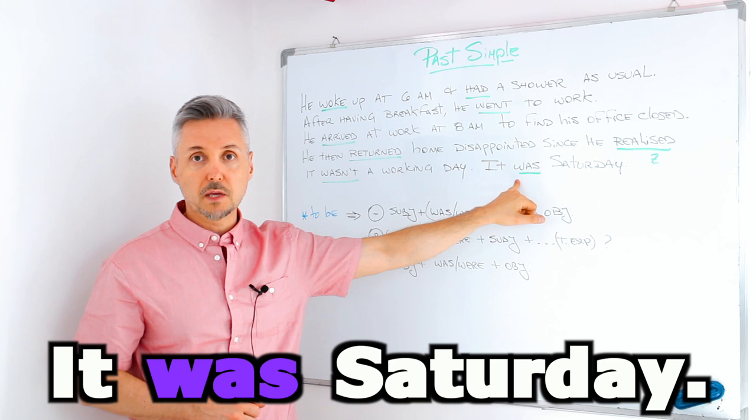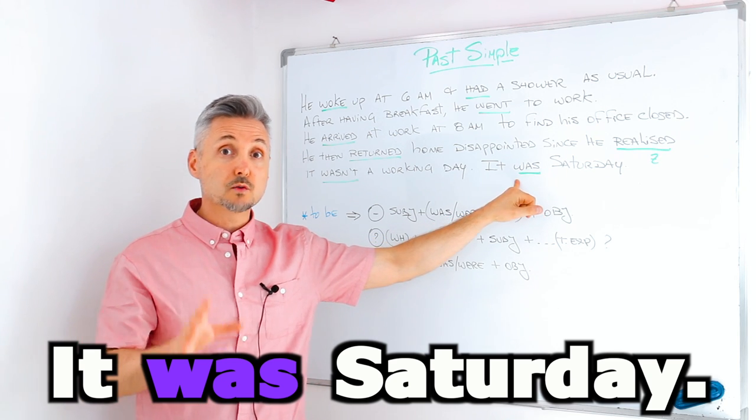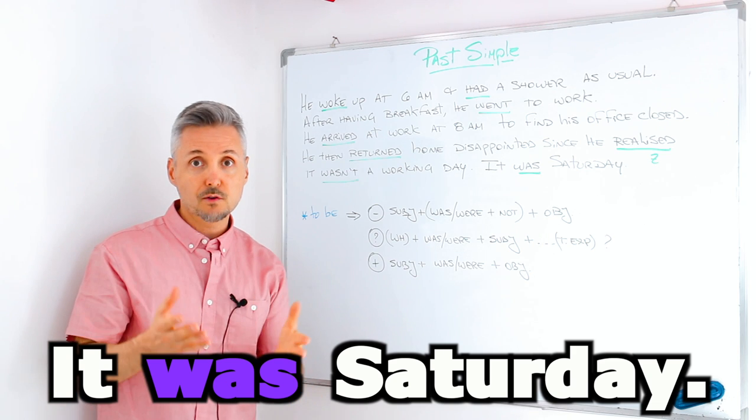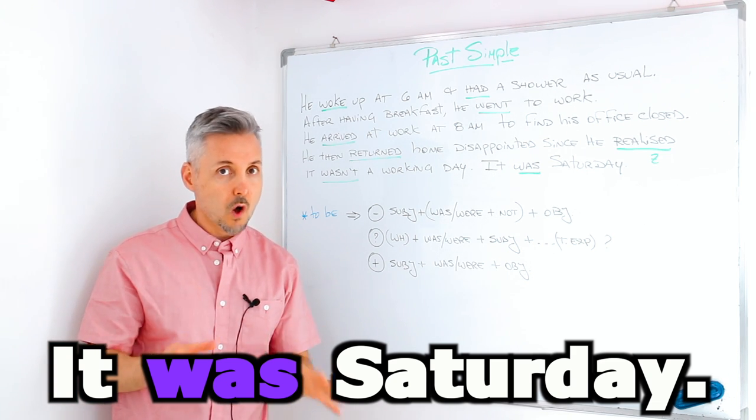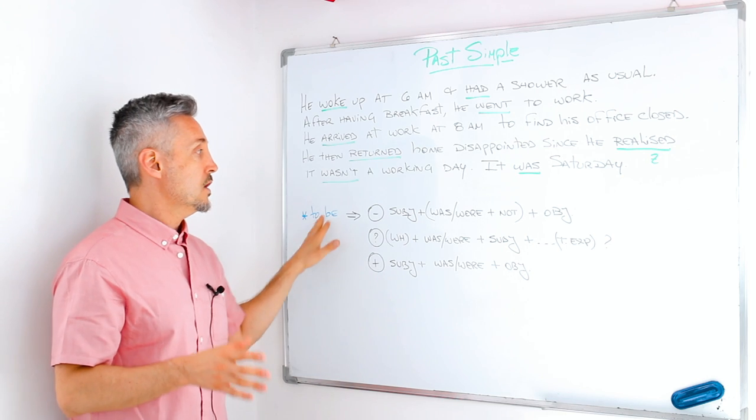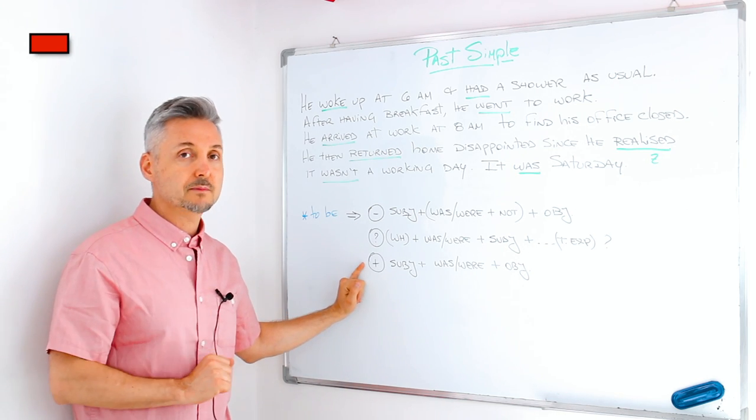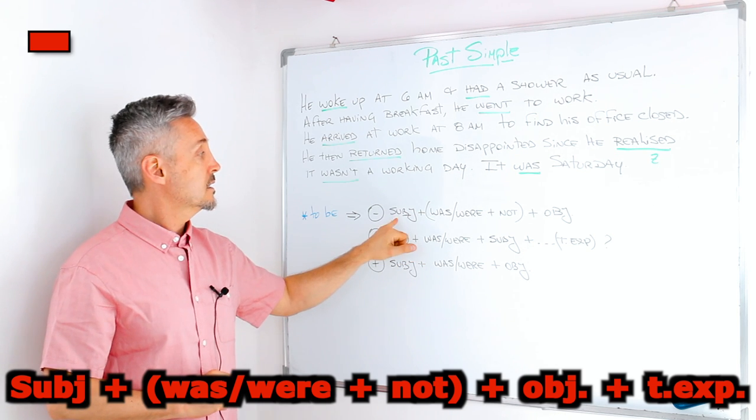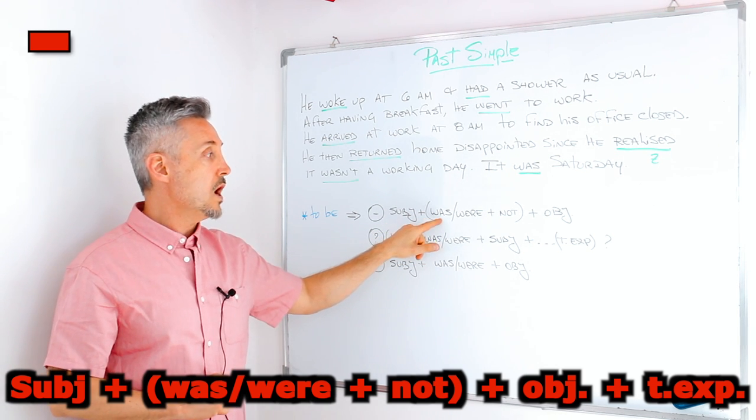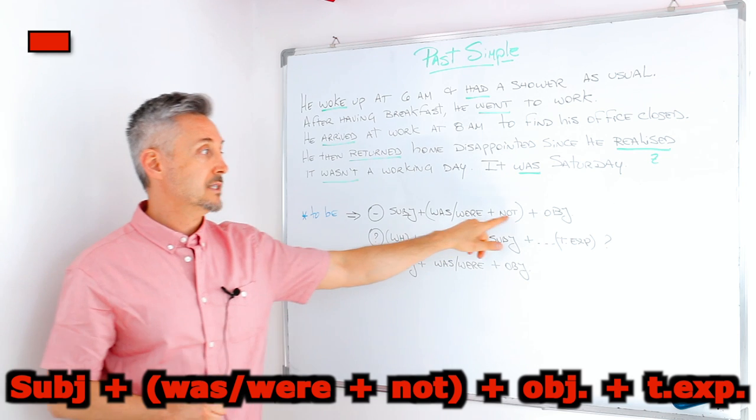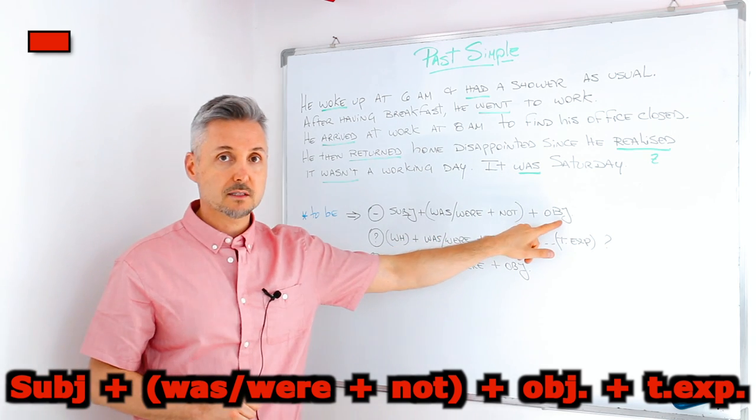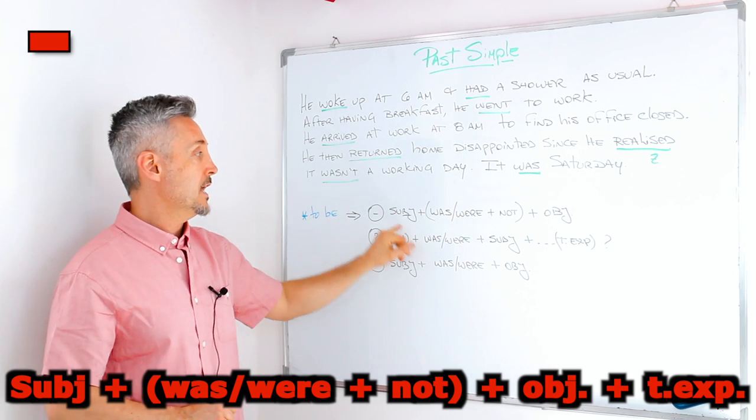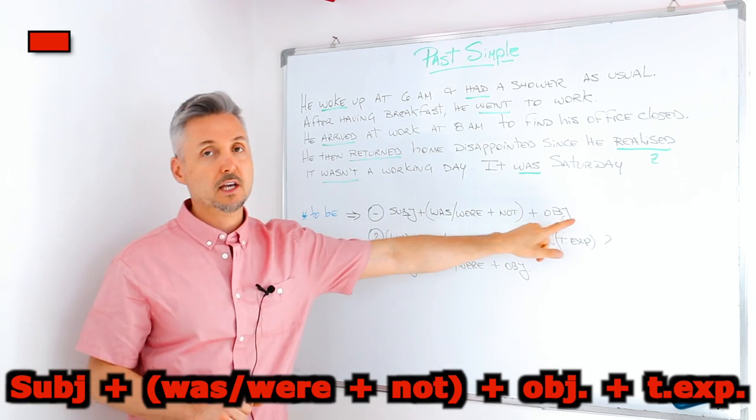And actually I wanted to mention that the verb to be is particular. And you know that, right? It's an exception almost always. So here I gave you the three types of sentences. Subject for a negative sentence. Subject plus was or were plus not plus the object. So it wasn't a working day.